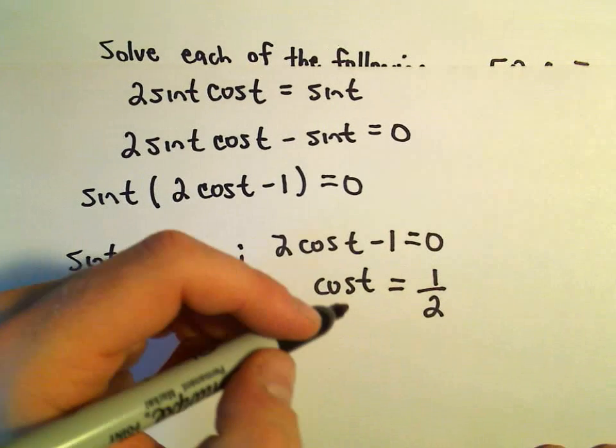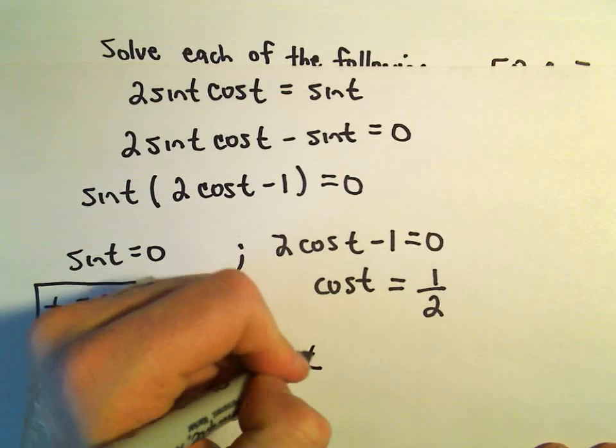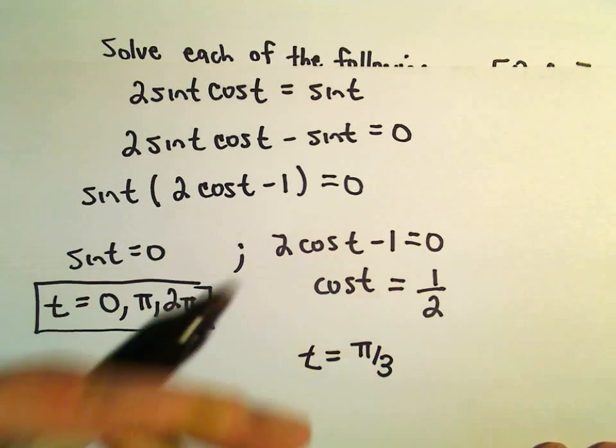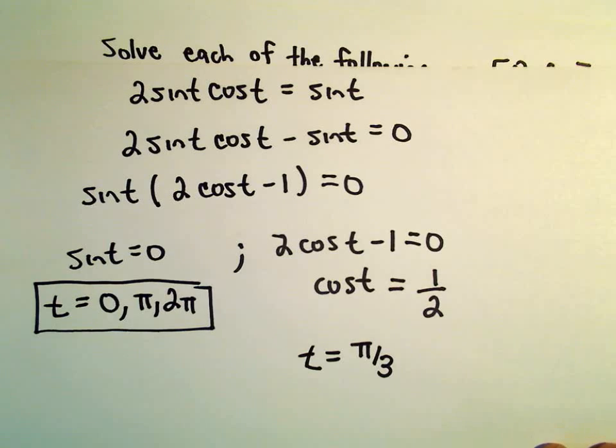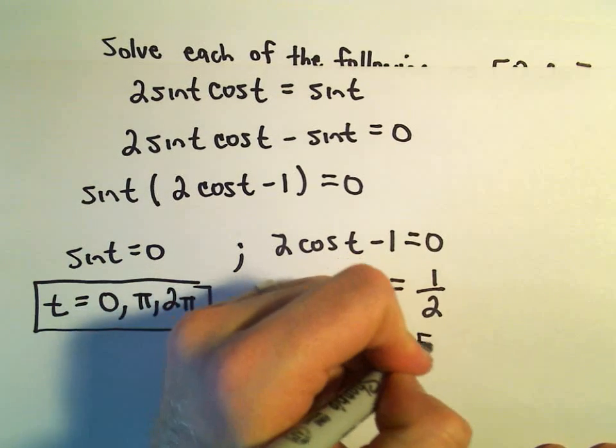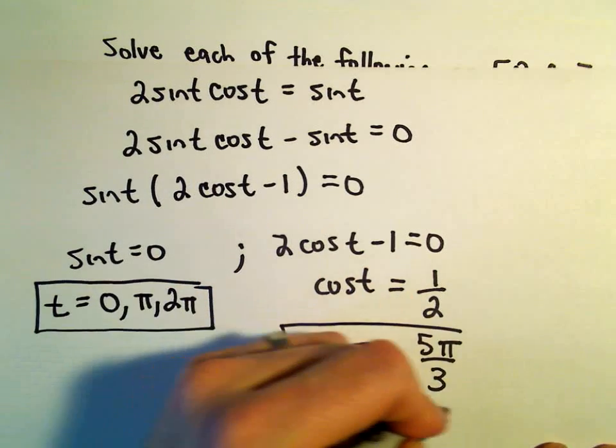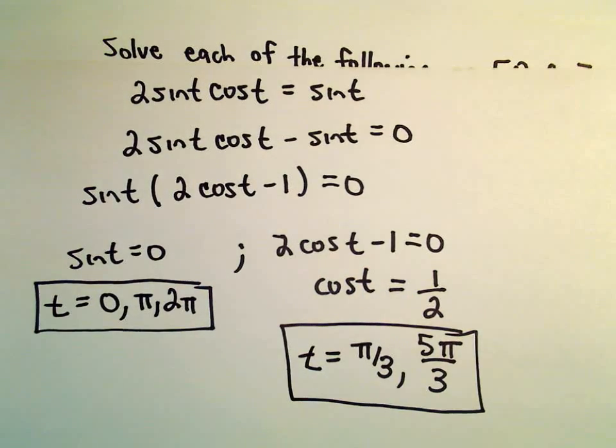Cosine of t equals 1 half. Cosine of the angle, I believe pi over 3. Cosine of pi over 3, that gives us 1 half. And down in quadrant 4, we'll also find the angle 5 pi over 3 as our other solution.